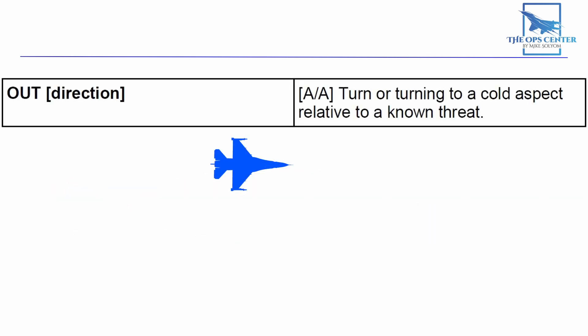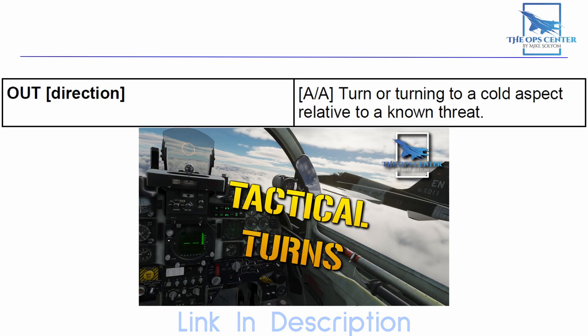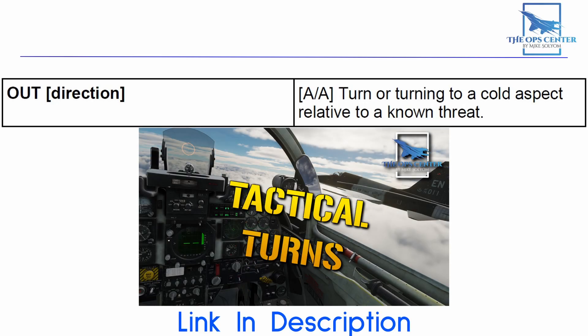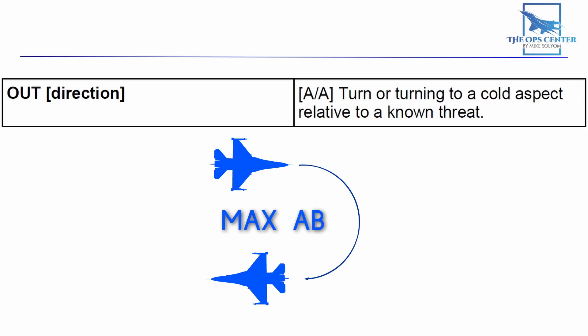To execute an OUT, make a tactical turn where you maintain airspeed throughout the turn and put the threat on your 6 o'clock. This is a lot like the tactical turns we went over in this video, but there's one important difference. An OUT uses max afterburner instead of mill power. Survival is the main concern here, so using more fuel to make the turn more quickly is acceptable.